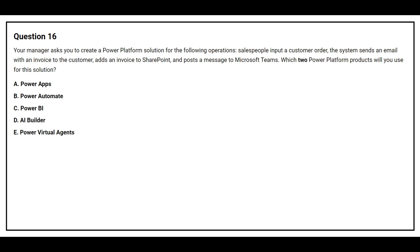Question 16: Your manager asks you to create a Power Platform solution for the following operations: salespeople input a customer order, the system sends an email with an invoice to the customer, adds an invoice to SharePoint, and posts a message to Microsoft Teams. Which two Power Platform products will you use? Options: A) Power Apps, B) Power Automate, C) Power BI, D) AI Builder, E) Power Virtual Agents. The correct answer is option A: Power Apps and option B: Power Automate.